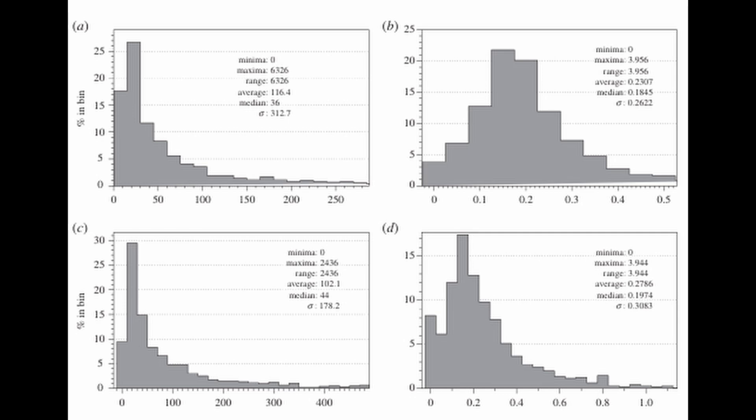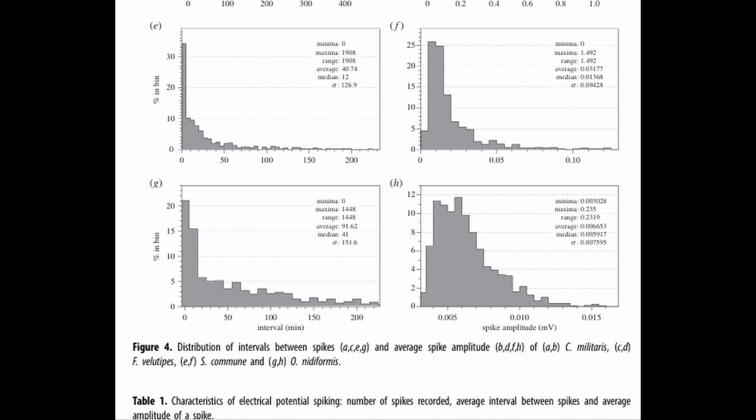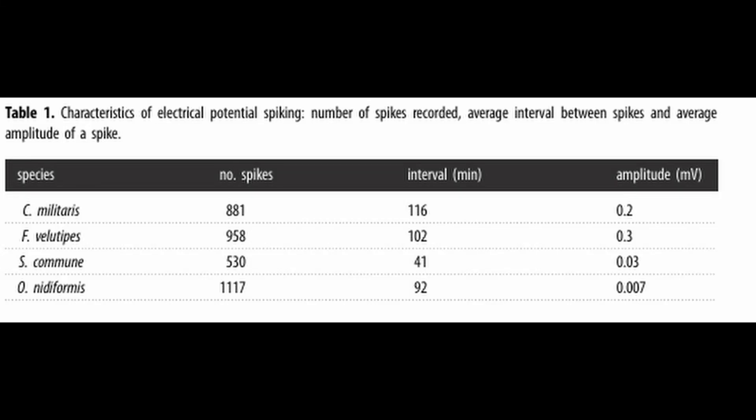Findings. The study revealed several fascinating aspects of fungal electrical activity. Electrical spiking characteristics. Each species exhibited unique spiking characteristics with varying durations and amplitudes. For instance, Cordyceps militaris showed the lowest average spiking frequency.